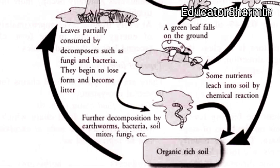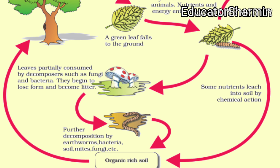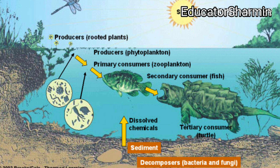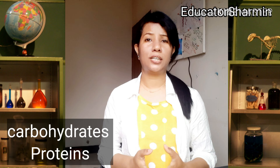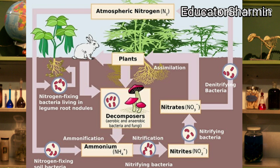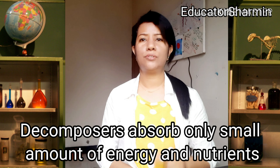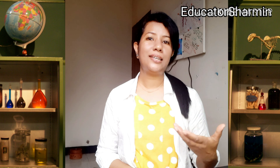Decomposers secrete enzymes onto their food source, such as a decaying leaf. They feed on dead and decaying organisms and their feces. Bacteria, for example, secrete enzymes that break down complex organic compounds like carbohydrates and proteins into simple, soluble, and gaseous inorganic compounds.